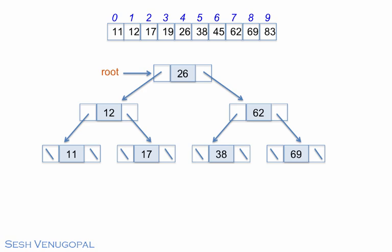Continuing with building our BST, the left subtree of 12 is done. In the right subtree of 12, 17 will not have a left child, but it will have 19 as the right child.